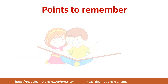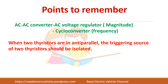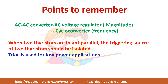To summarize: AC-AC converters are of two types. An AC voltage regulator changes only the magnitude and cannot change the frequency. A cycloconverter, also called a frequency changer, converts one frequency to another. When two thyristors are connected in anti-parallel, the triggering source of each must be isolated. TRIACs are used for low power applications.